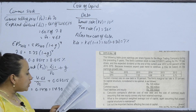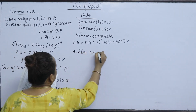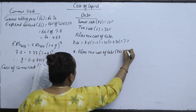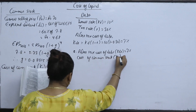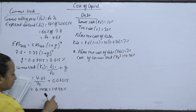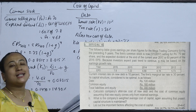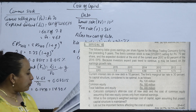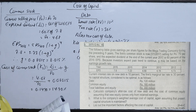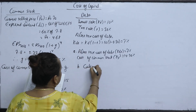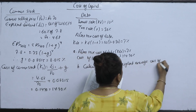Assuming new equity comes only from retained earnings, we calculate the company's weighted average cost of capital (WACC), assuming the present capital structure is maintained.